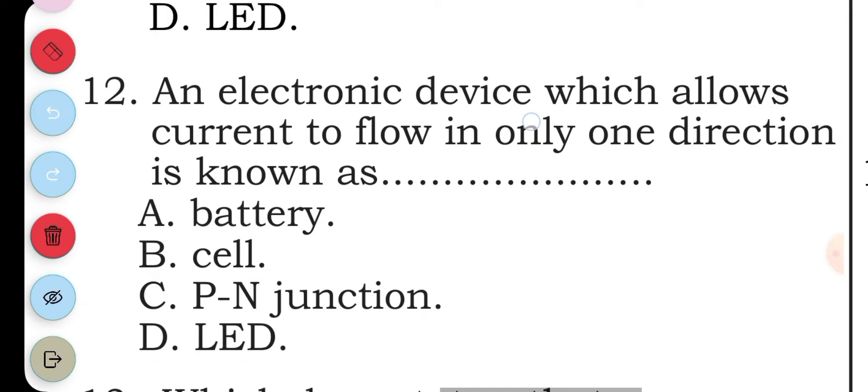Question twelve: an electronic device which allows current to flow in only one direction is known as: A battery, B cell, C P-N junction, D LED. The answer to question twelve is C, P-N junction.